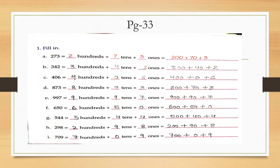Now, Part F: 650. Digit 6 is at hundreds place, digit 5 is at tens place, and 0 is at ones place. You will write: 6 hundreds + 5 tens + 0 ones. In expanded form: 600 + 50 + 0. This is the expanded form of 650.